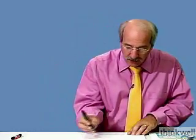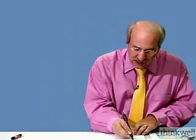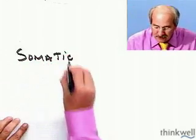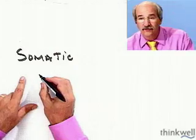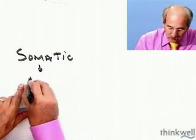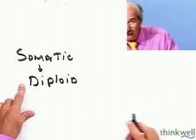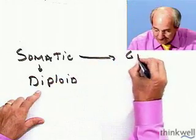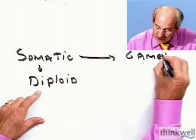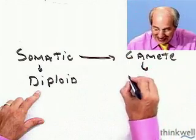Let me lay some vocabulary on you. In summary, and then we'll look at the plan for meiosis: a somatic cell — when we talk about its chromosome number — is referred to as diploid. You can see the prefix 'di' there. And a gamete is referred to as haploid.